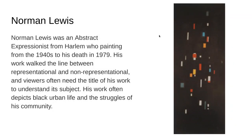Now we're going to put the spotlight on the artist Norman Lewis. Norman Lewis was an abstract expressionist, which is a genre of art — similar to pop art or Renaissance art. He was from Harlem and he painted from the 1940s to his death in 1979. His work really walked the line between representational and non-representational artwork, and viewers often need to know the title of his work in order to see the subject. His artwork often showed black urban life in Harlem and the struggles of his community.